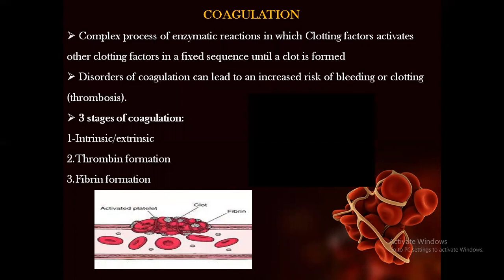Overall, the clotting or coagulation process is an enzymatic reaction process which consists of different steps, including three prominent stages: the intrinsic and extrinsic pathway, thrombin formation, and fibrin formation. Depending on the site of injury — whether external or internal trauma — the intrinsic and extrinsic pathways work. We will see this coagulation pathway from a video obtained from Science Art, which defines the blood coagulation pathway in a very systematic mechanism of blood clotting at the site of injury.